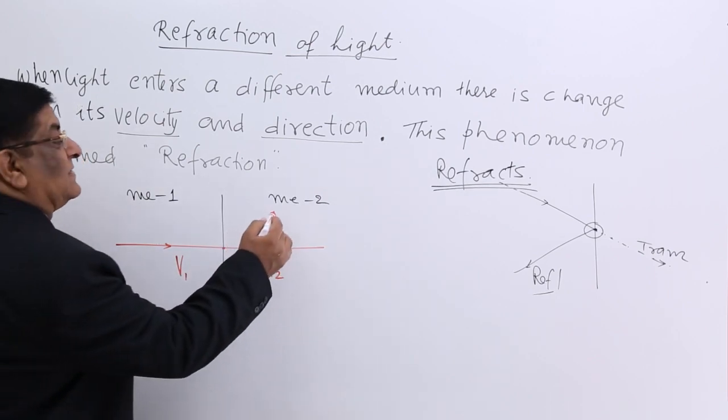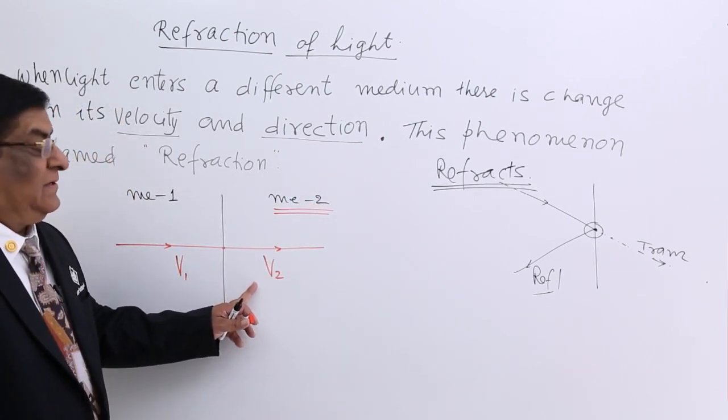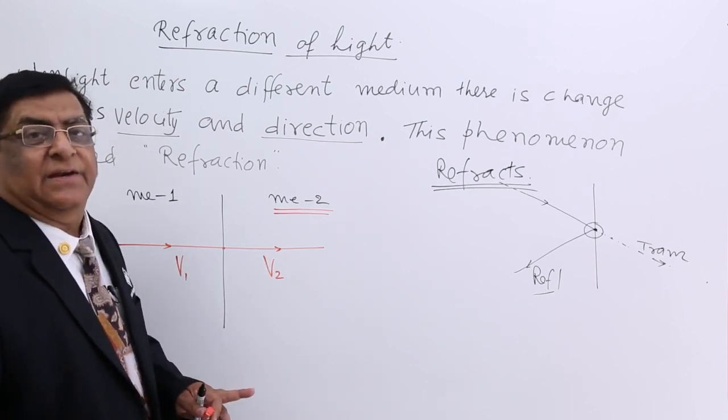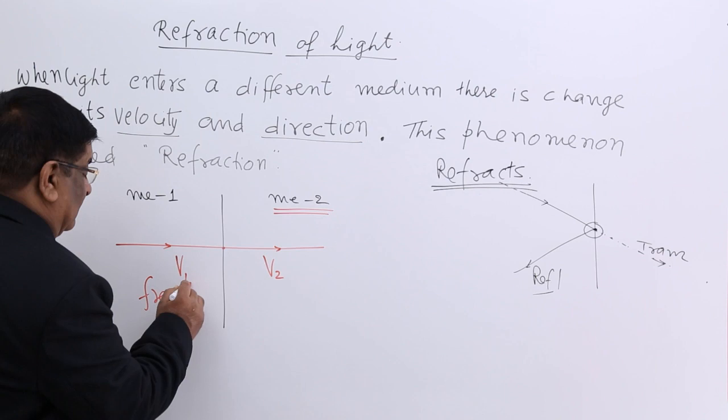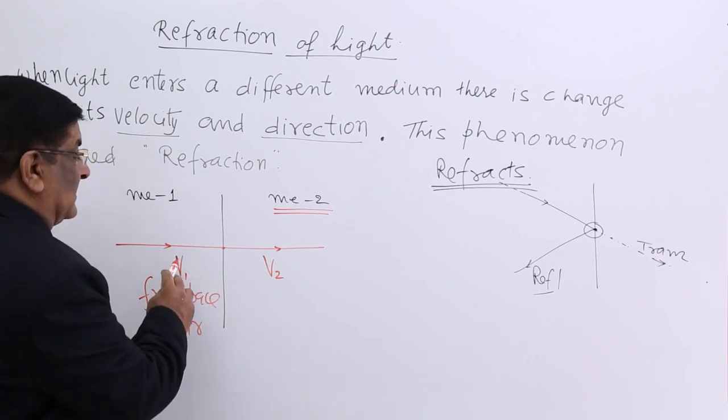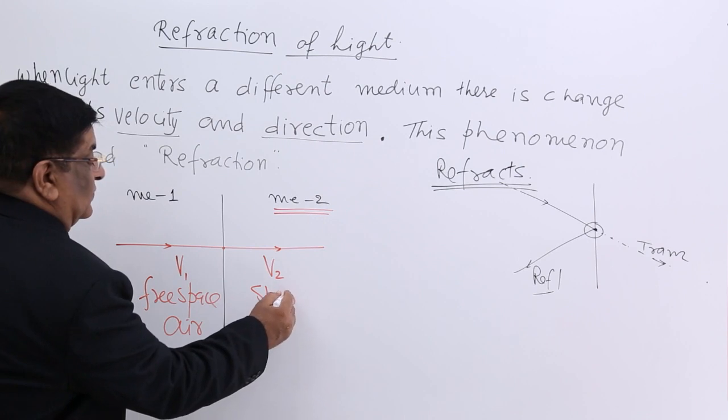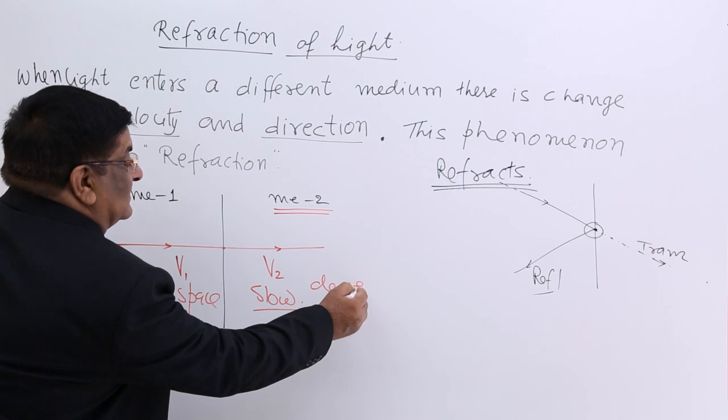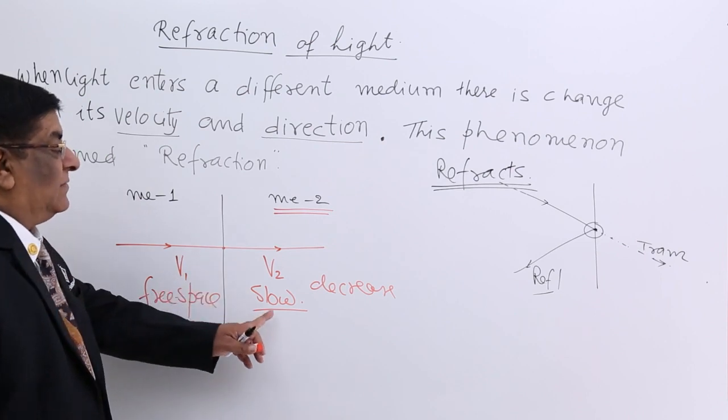Now this depends upon the characteristic of medium 2, whether this velocity is slowed down and how much. We have seen that if the light is coming from free space or air, that is as good as free space, then any medium in nature will always slow it down. So velocity always decreases when the light is coming from free space; it becomes slow.